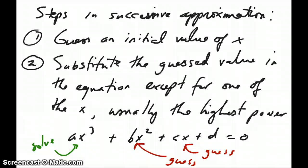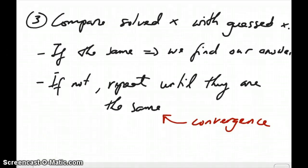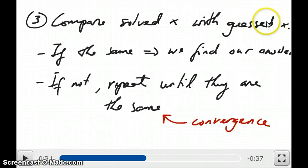And whatever that solution is, if that's also equal to zero, that means that you're done. If it's not equal to zero, then you're going to repeat this step again and again until at some point whatever you're guessing, the value of x you guess is the same as the value of x that you solve.